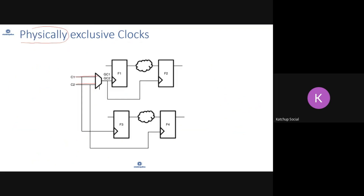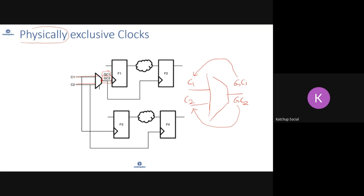Now, physically exclusive clocks. Let's say you have two clocks — generated clock one and generated clock two — defined at the mux output. C1 comes into the mux, C2 comes into the mux, and at the mux output you define GC1 and GC2. Generated clock one is a divide-by-one version of C1, and generated clock two is a divide-by-one version of C2.